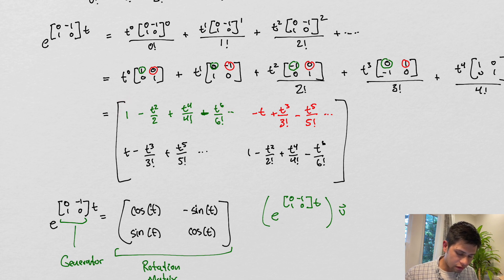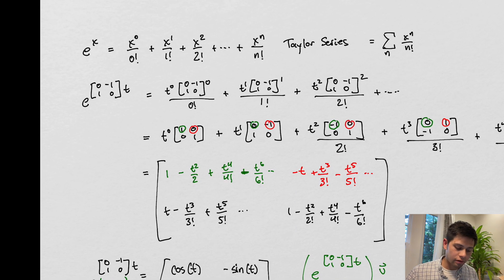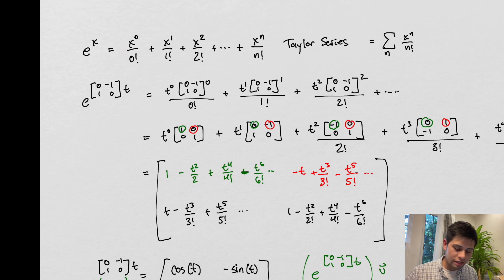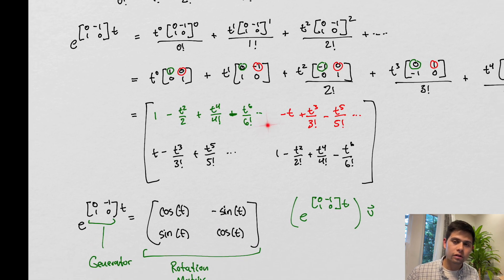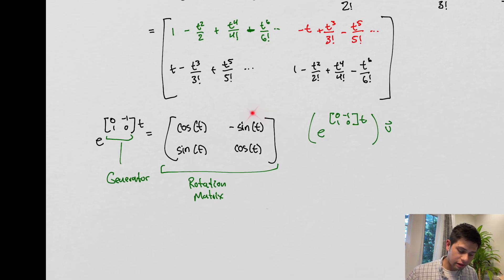Well, these look like Taylor expansions again, not this Taylor expansion, but these are Taylor expansions of trigonometric functions, sine and cosine. More specifically, this is a cosine, this is a cosine, this is a sine, this is a sine, this is just a negative of this. And so we get this.